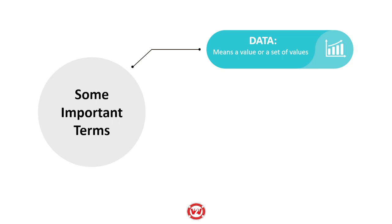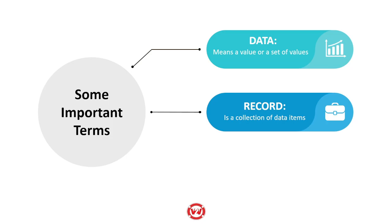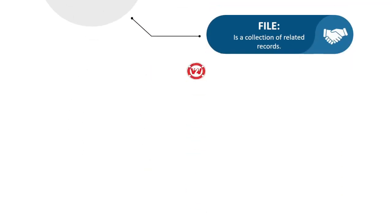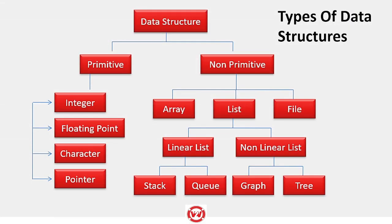For a data structure, there are some important terms to know. First is data — what you are actually going to store. A record is a collection of data, like the database of all students who have cleared a course last year. A file is a collection of all those records — for example, a file of students who have attempted data structures as a subject. Data structures are divided into two major types: primitive and non-primitive. Primitive data structures include integer, floating point, characters, and pointers.